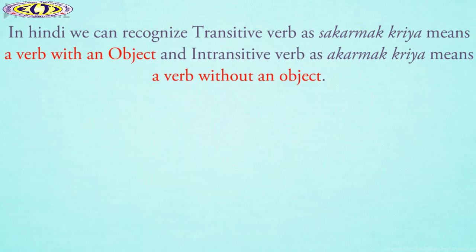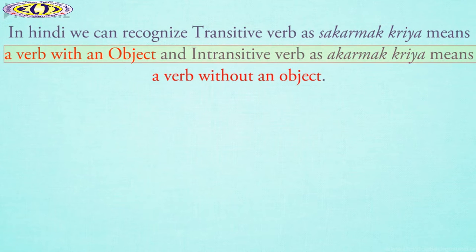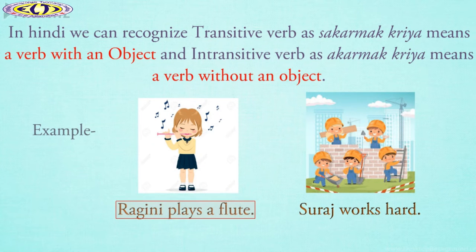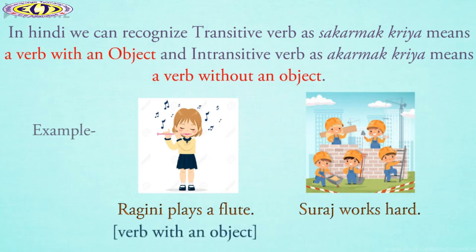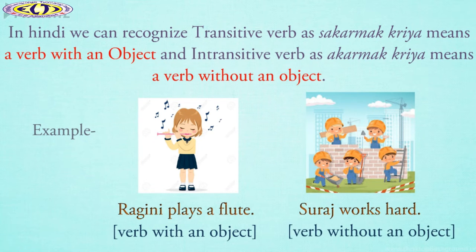In Hindi, we can recognize transitive verb as 'Sakarmakriya', meaning a verb with an object, and intransitive verb as 'Akarmakriya', meaning a verb without an object. For example, 'Ragni plays a flute' — here the verb 'play' is used with an object, so it is a transitive verb. While in the second sentence, the verb 'work' is used without an object, so it is an intransitive verb.